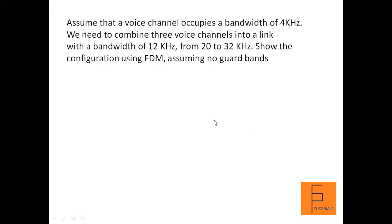Now let's take an example. A voice channel occupies a bandwidth of 4 kHz. We need to combine three such voice channels into a link with a bandwidth of 12 kHz, where the bandwidth ranges between 20 and 32 kHz. We have been asked to show the configuration using FDM, assuming that there are no guard bands used. So we have three voice channels, each with a bandwidth of 4 kHz, to be passed through one link of bandwidth 12 kHz ranging from 20 to 32 kHz.